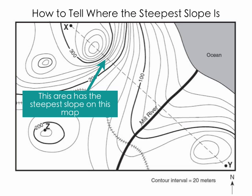like in this area up here near the top of the map — we would know that this has to have the steepest slope. What that means is that over a very short distance there's a very substantial change in elevation, and a big change in elevation over a short distance means a very steep slope. So the steepest slope is here because the contour lines are tightly packed together.